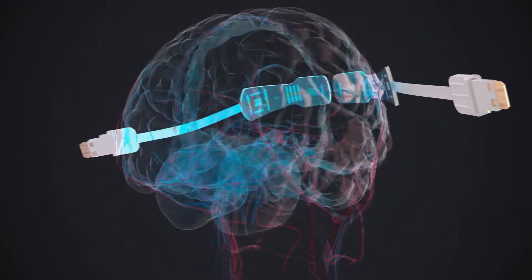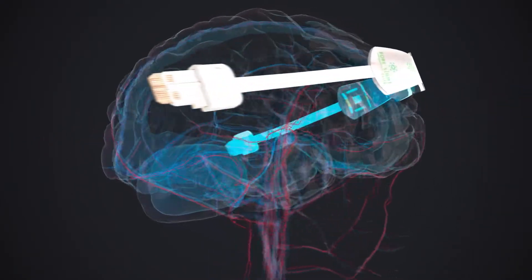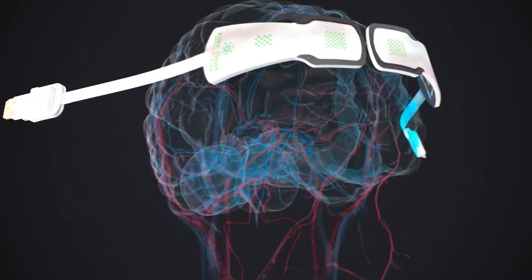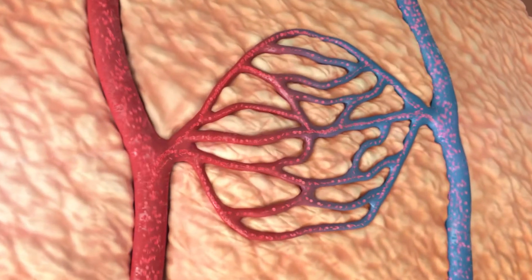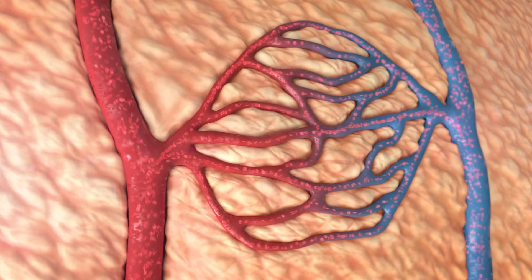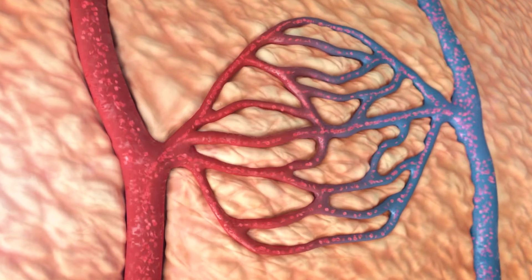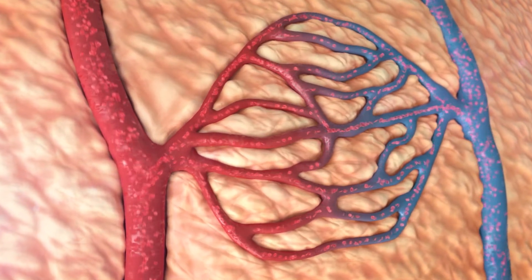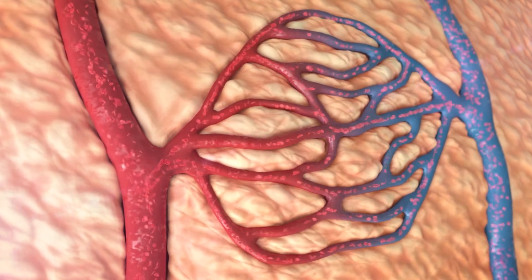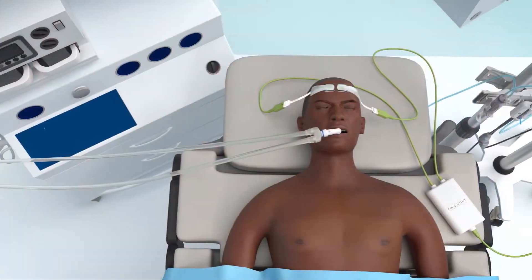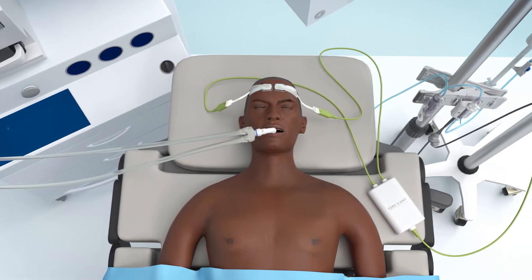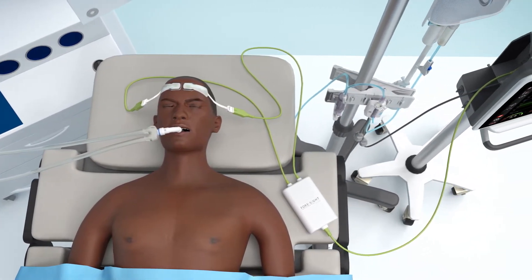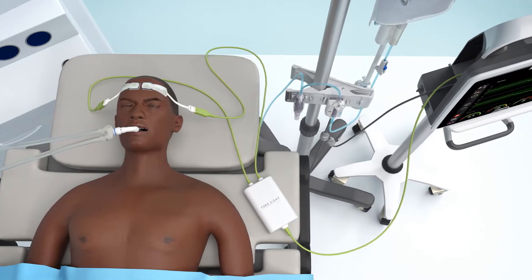The Foresight Cerebral Tissue Oximeter continuously monitors STO2 values, which reflect the brain's balance between oxygen delivery and consumption, and can update every two seconds. An imbalance can quickly be identified and mitigated by the clinician if STO2 monitoring is being used. The following animation will describe the different physiologic factors that affect this balance and how they can be addressed if an imbalance occurs.